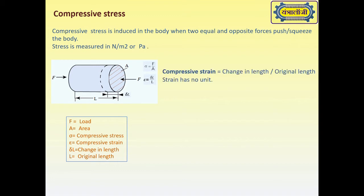Compressive strain is change in length upon original length. Here, change in length is delta L, the reduction in length due to force F, and original length was L. Hence, compressive strain epsilon equals delta L upon L.